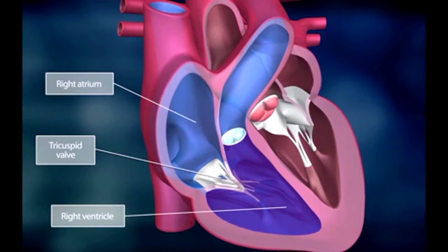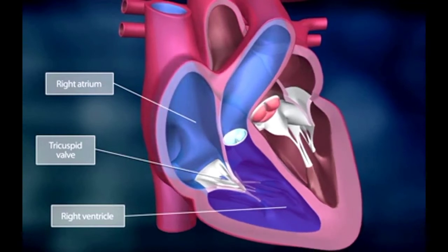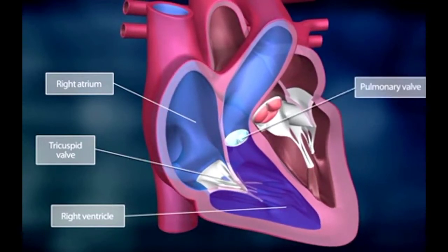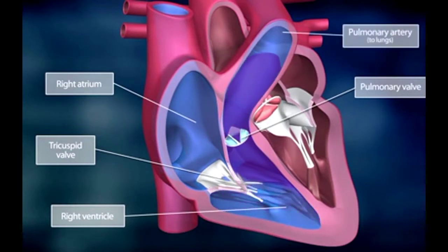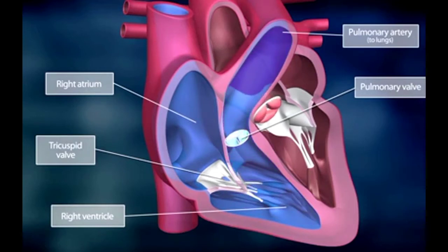Now the right ventricle contracts and the pulmonary valve opens, and blood is pumped through the pulmonary artery into the lungs, where it is enriched in oxygen. This phase is called ventricular systole.